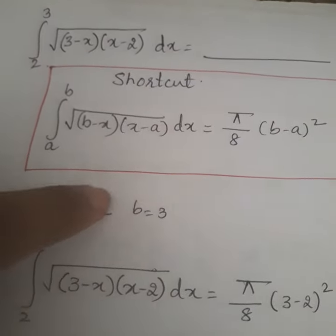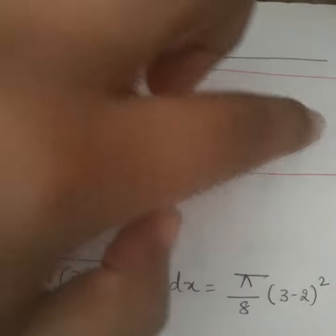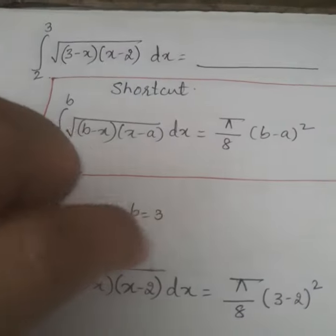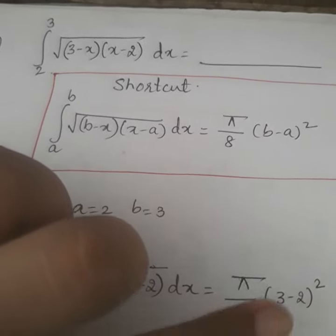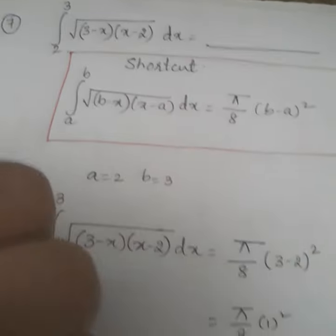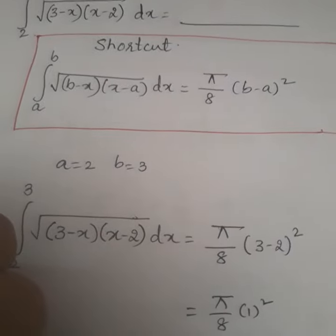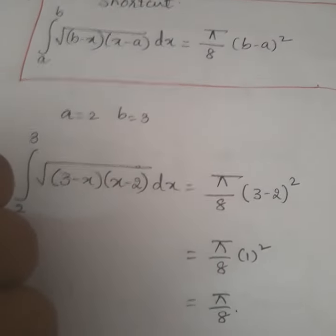Once I obtain a and b values, my next task is to substitute them in this equation. Once I substitute a and b values, I will be getting an answer like π/8 times (3 minus 2) whole square, which is π/8 times 1 squared, which equals π/8. That will be my answer.